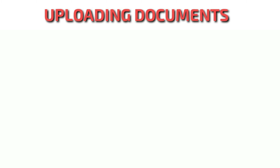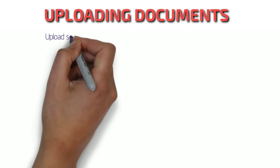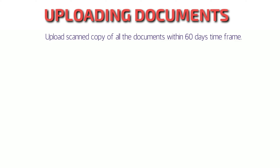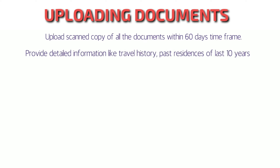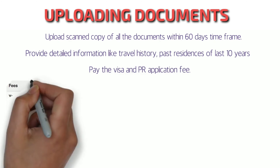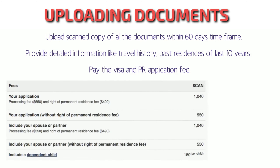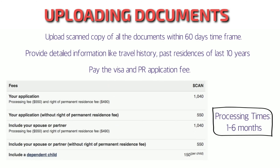The next step is uploading the documents. You have a 60-day time frame to upload all documents — scan them clearly before uploading. While submitting the online application, you'll also be asked for proof of the past 10 years of travel history and residence proof, providing detailed information on where you stayed and traveled. You also have to pay the visa fee and application fee online. For an individual, it is almost 1,040 Canadian dollars, not including the permanent residence fee of 550 Canadian dollars. Adding a spouse costs another 1,040 Canadian dollars. The processing time varies from 1 to 6 months.